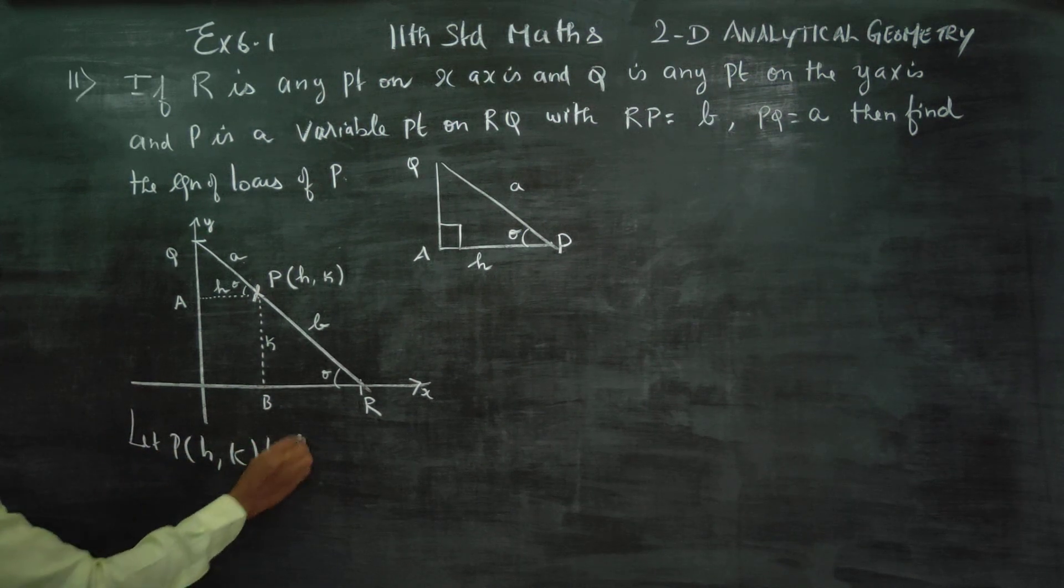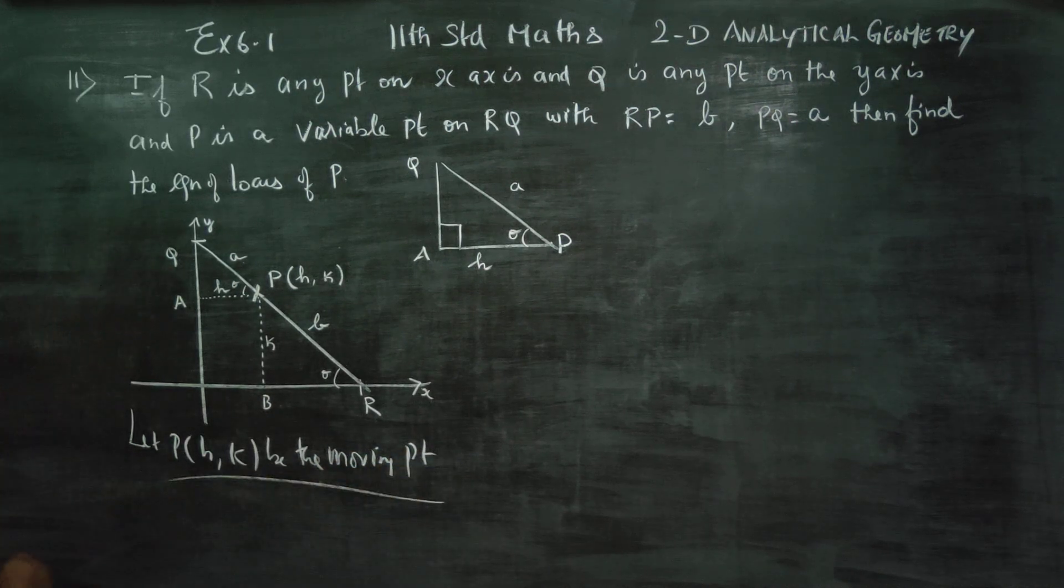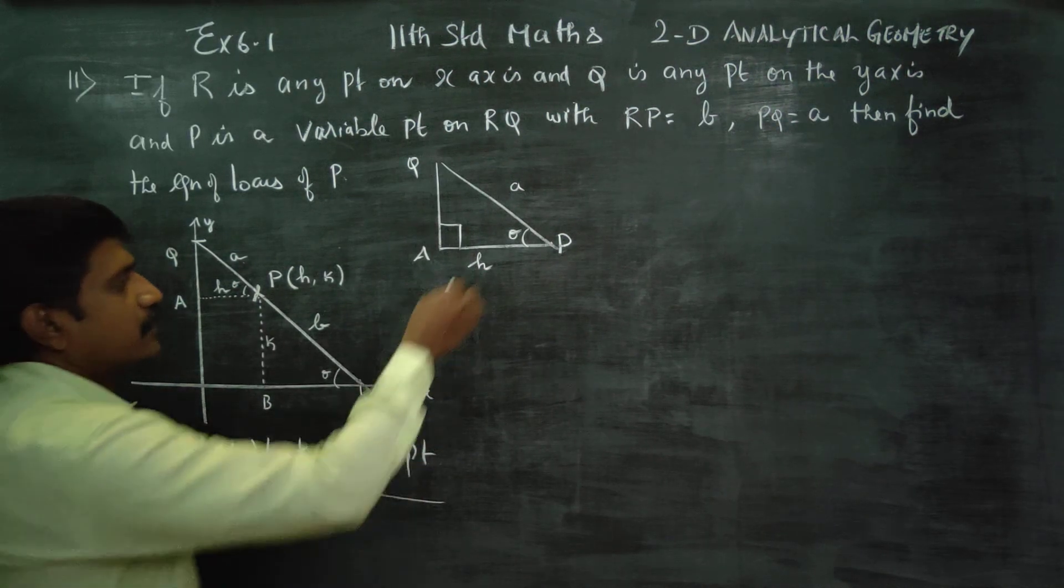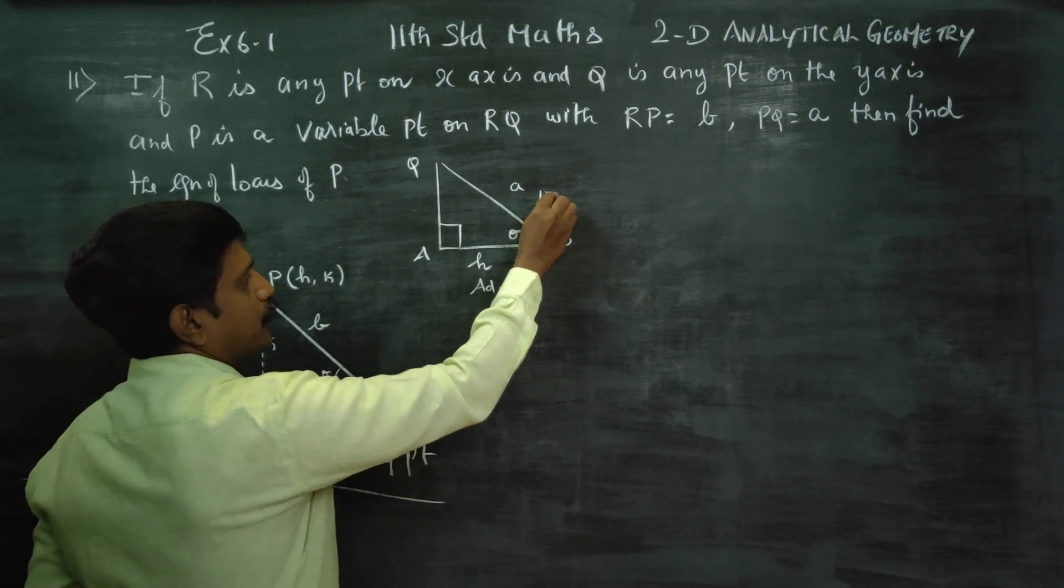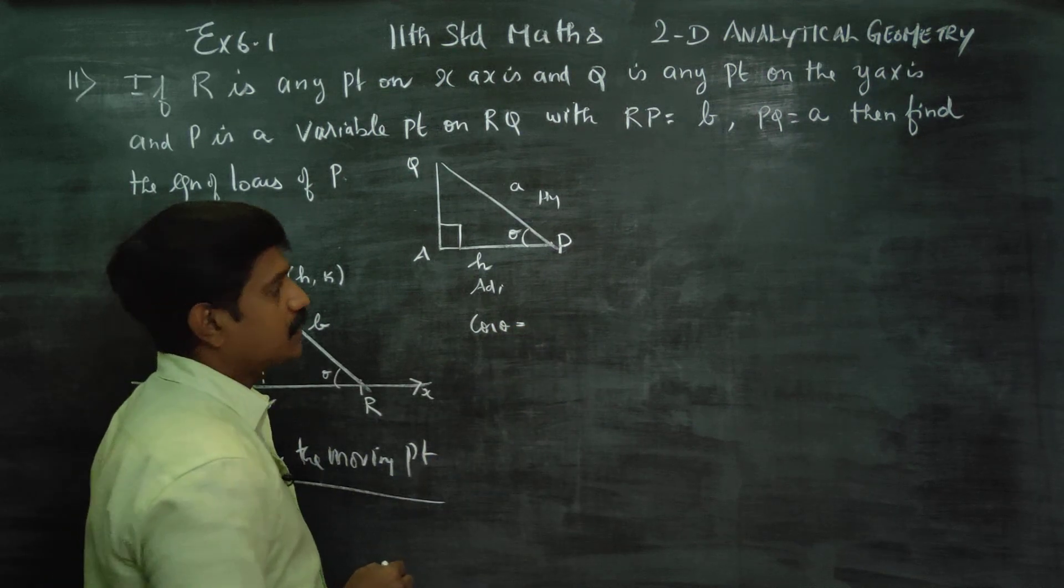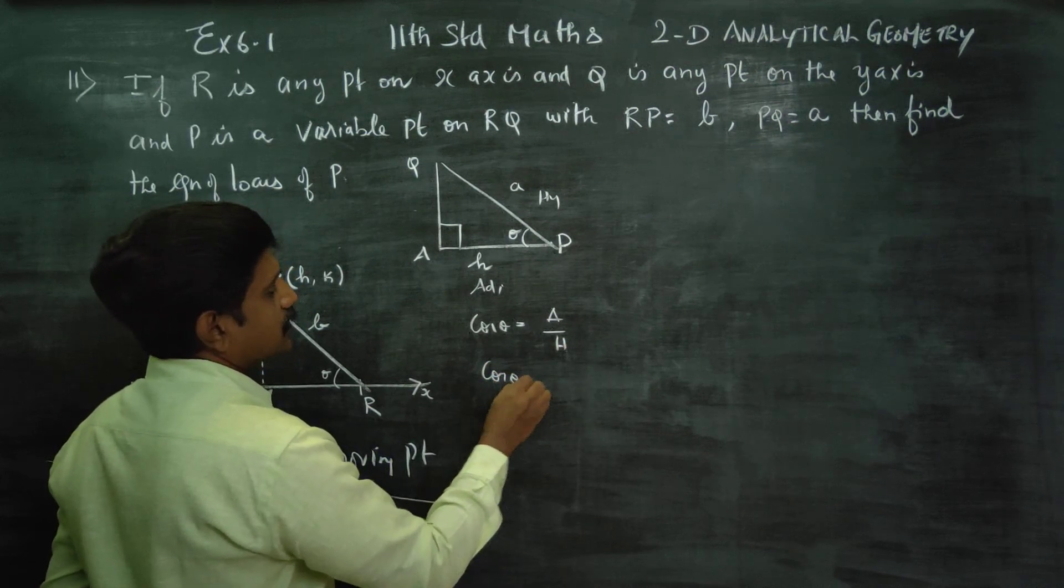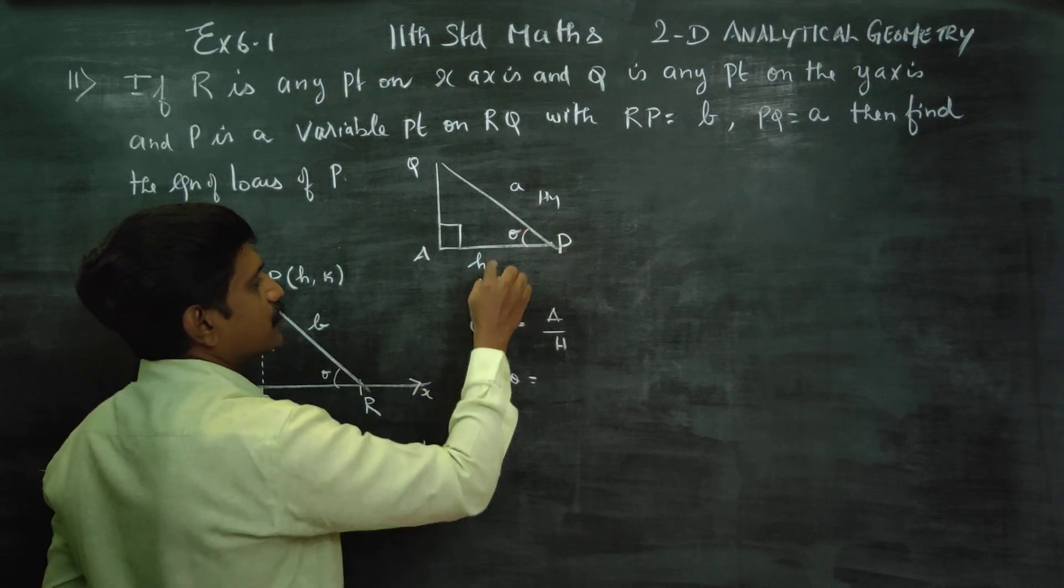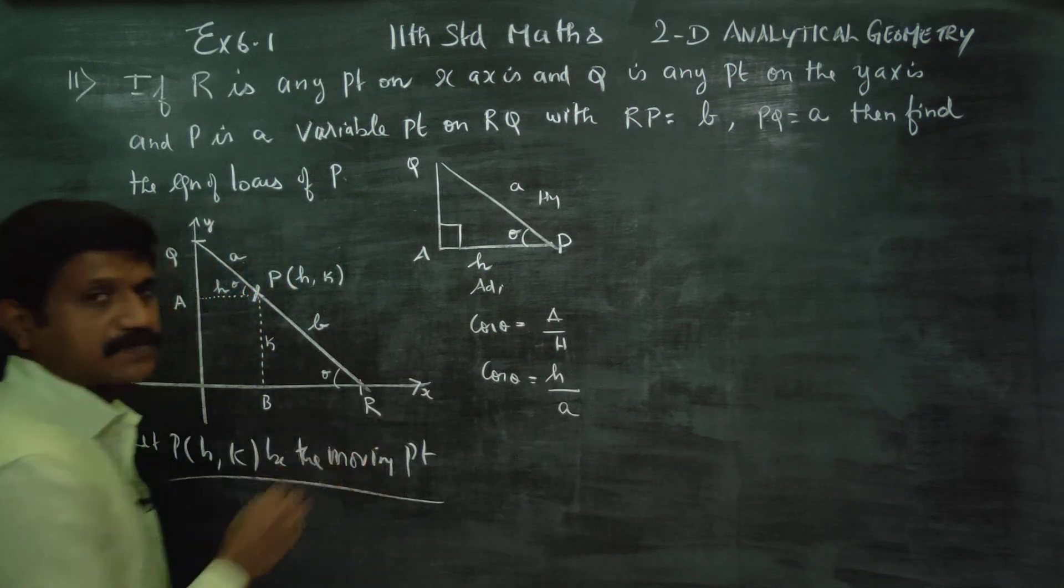Be the moving point. You can see this is the opposite side, this is the adjacent side, this is the hypotenuse. Cos theta is equal to adjacent side by hypotenuse. That is, cos theta is equal to adjacent side H by hypotenuse A.